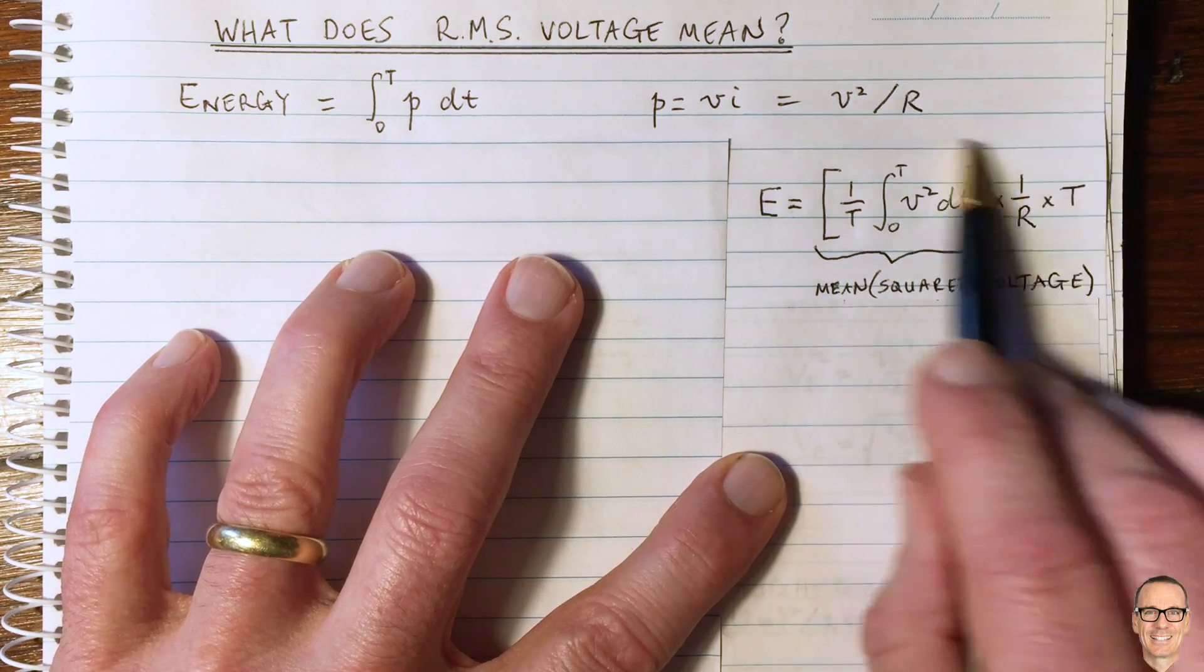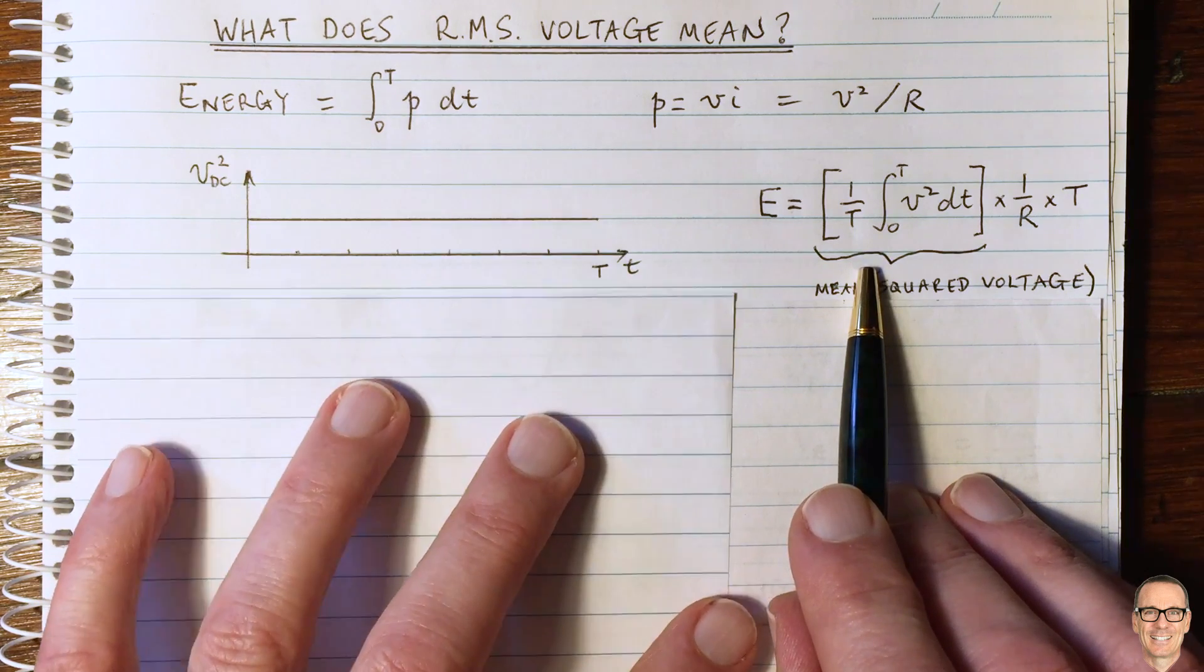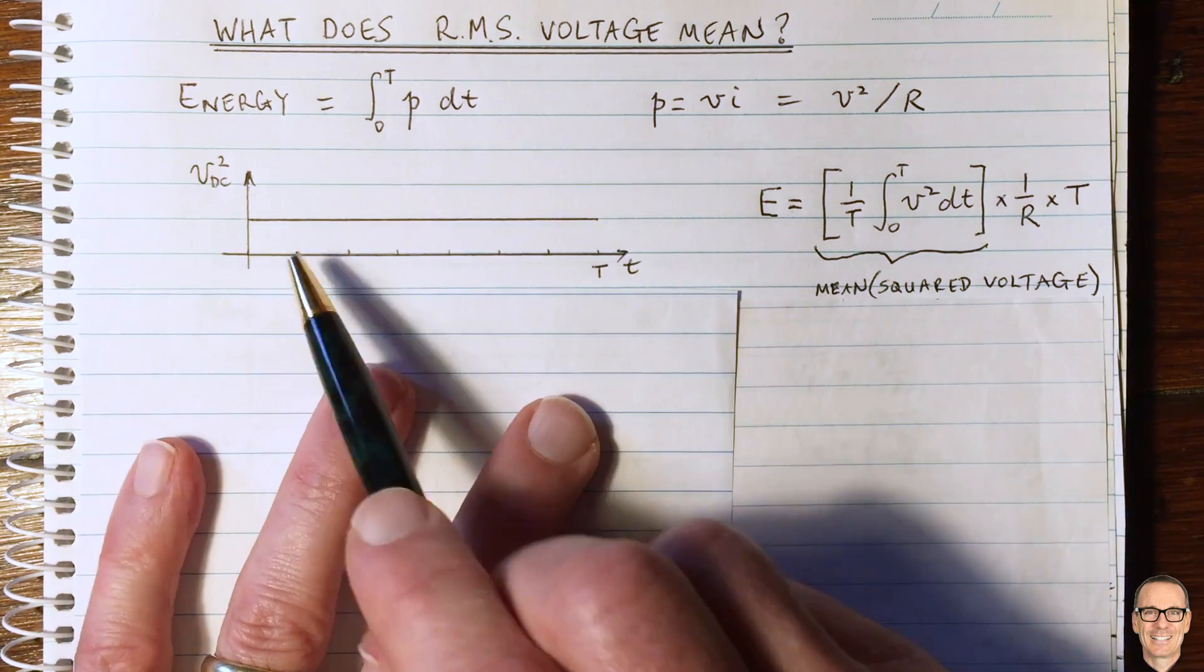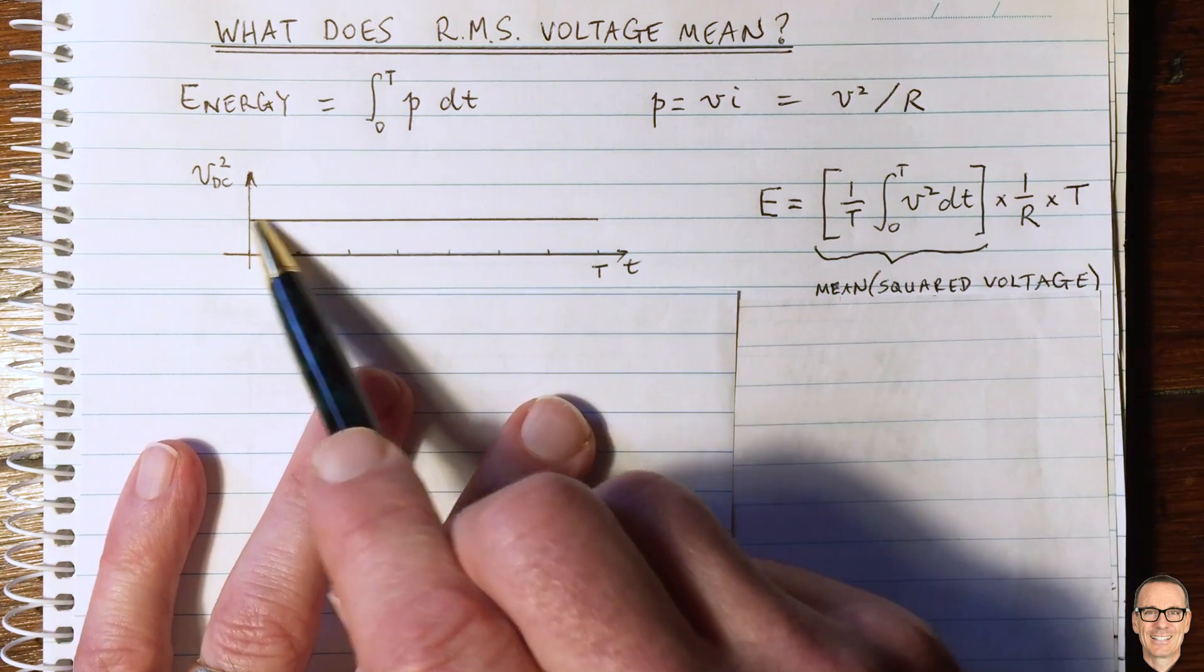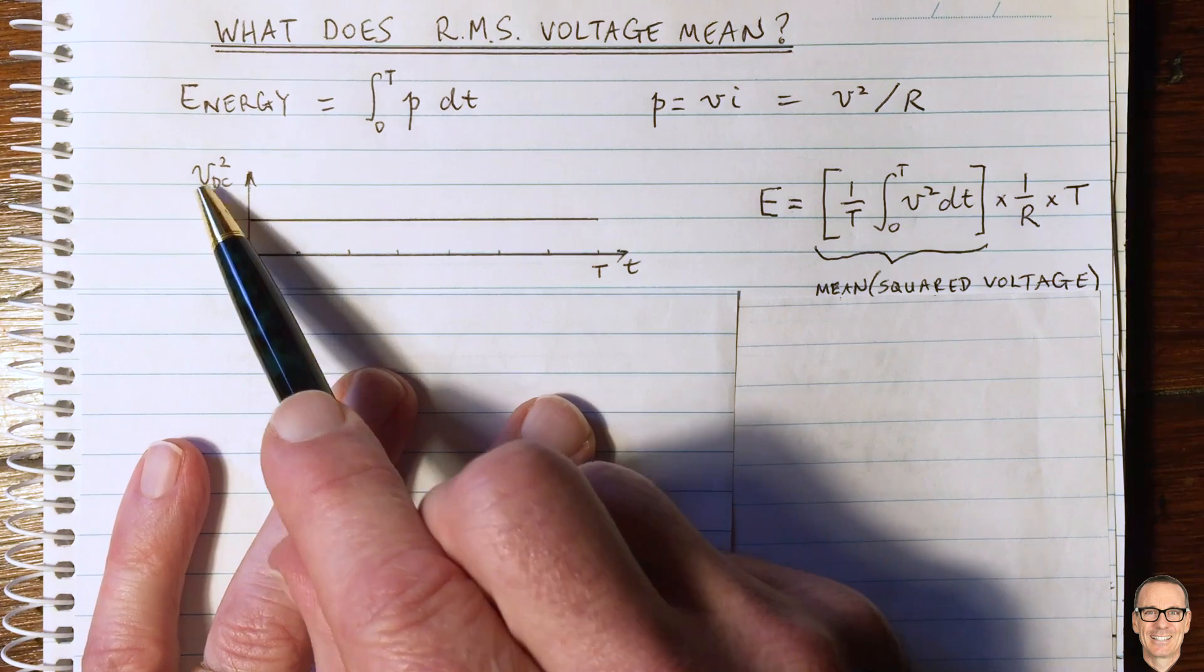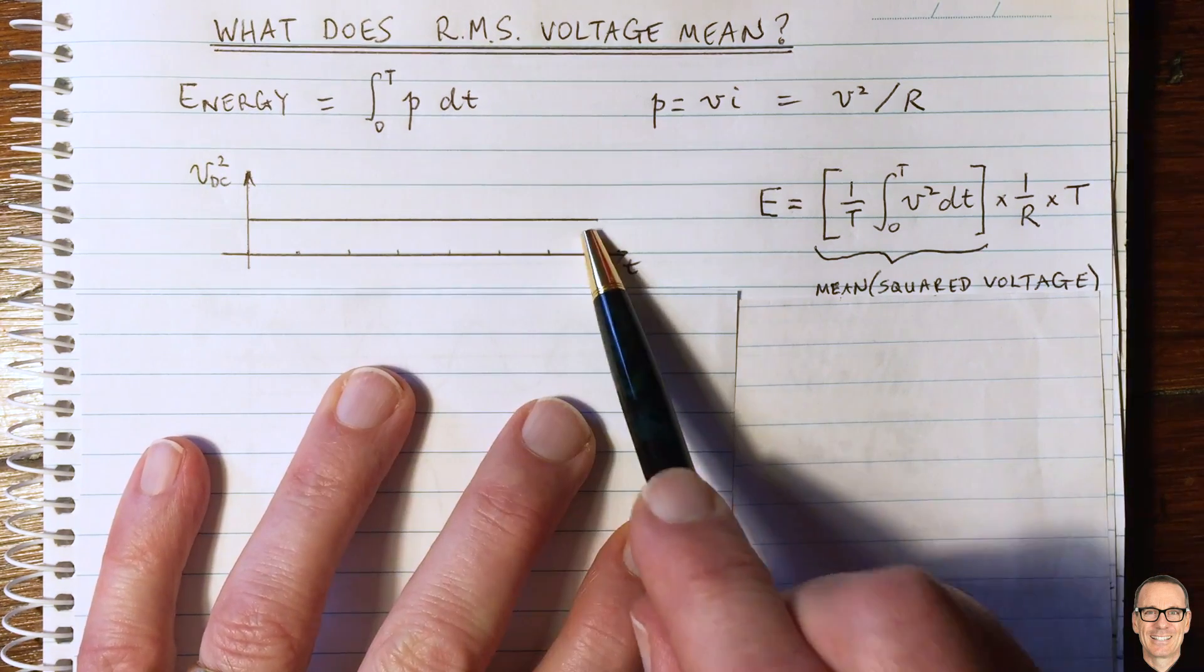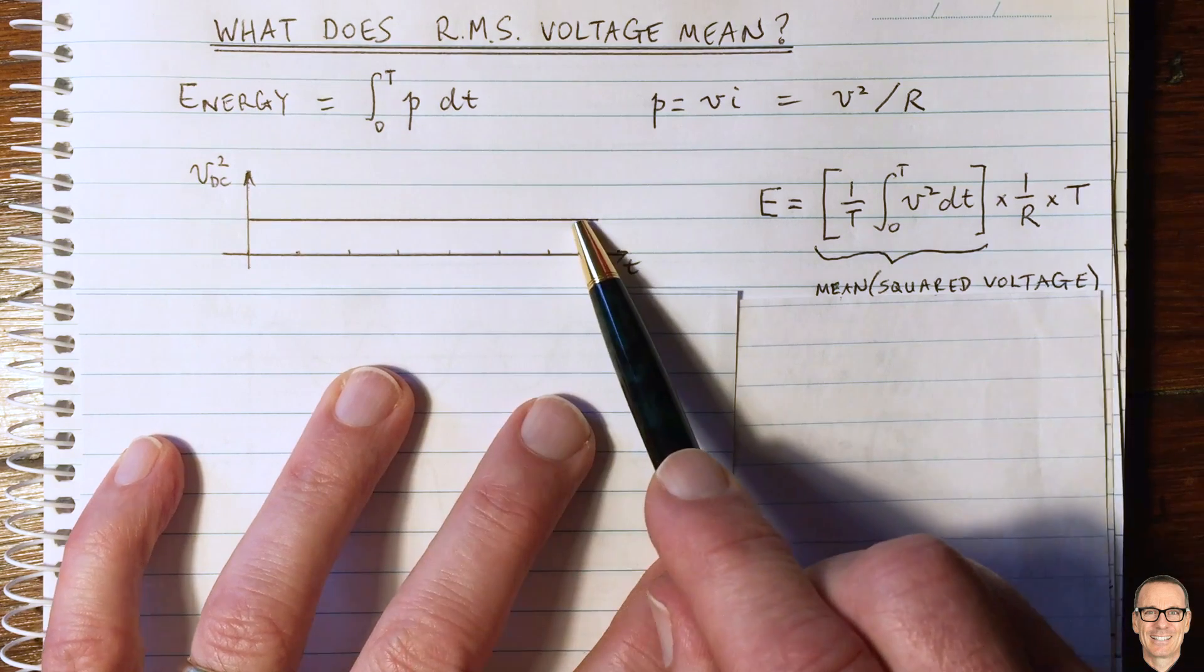So let's think about an example of this. Let's think about direct current situation. So in this case, the voltage is a constant. So the squared voltage will also be a constant. So I've drawn an example of that here. So this is for DC. The voltage squared is a constant, and the mean, therefore, is just a constant value.